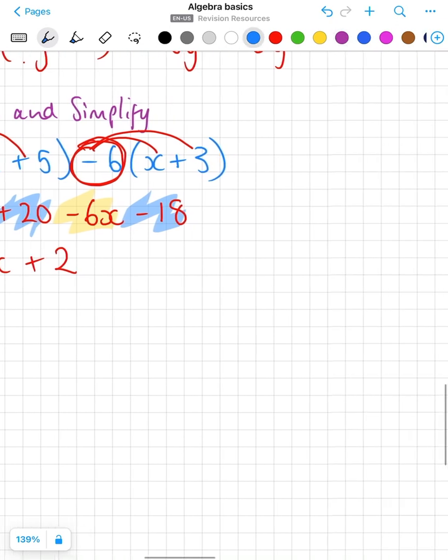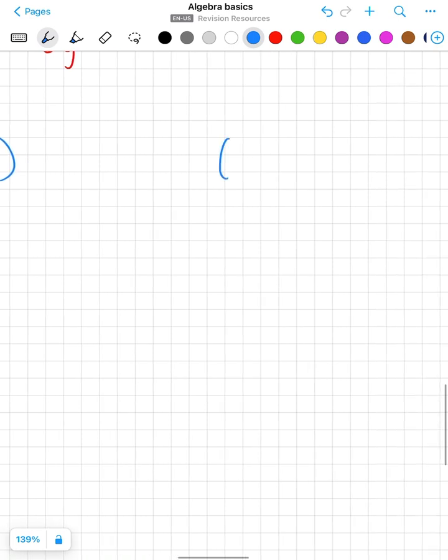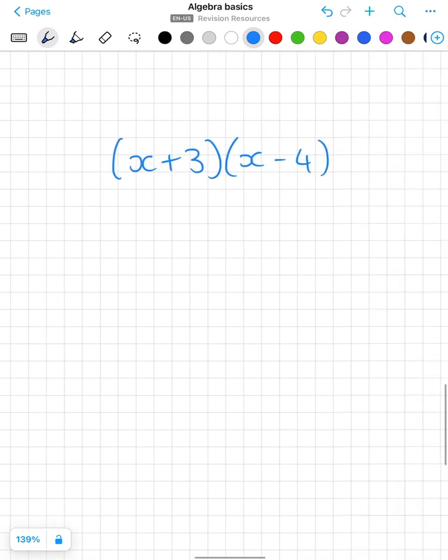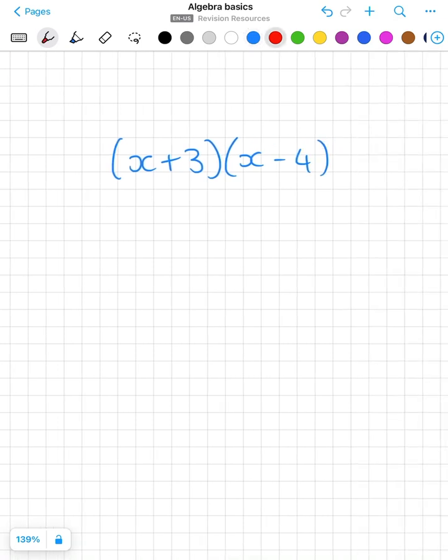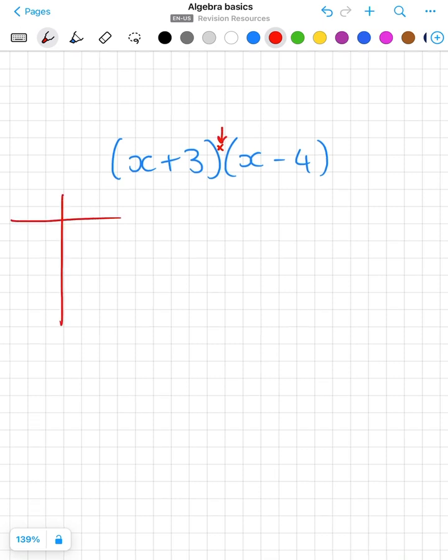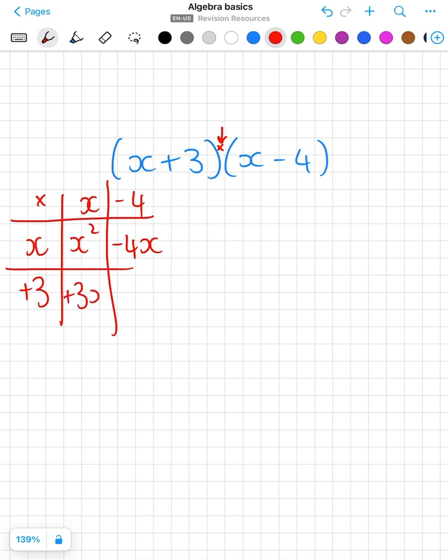Another expand and simplify that looks slightly different is expanding double brackets. And what we're doing here is really there is an invisible multiply in between our two brackets. So two different methods, you can use the grid method. So we're multiplying x plus 3 by x minus 4 and you fill in your grid: x times x is x squared, x times minus 4 is minus 4x, plus 3 times x is plus 3x.